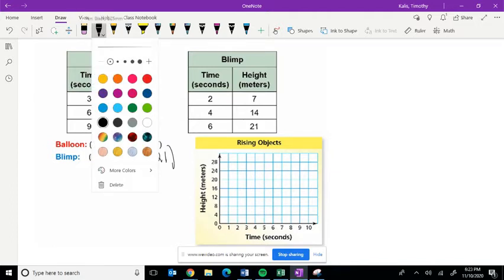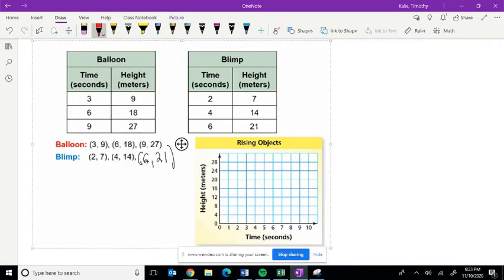So now we're going to graph both of these. And then after we graph them, we're going to determine which one rises faster, whether that's the balloon or the blimp. So the balloon first.